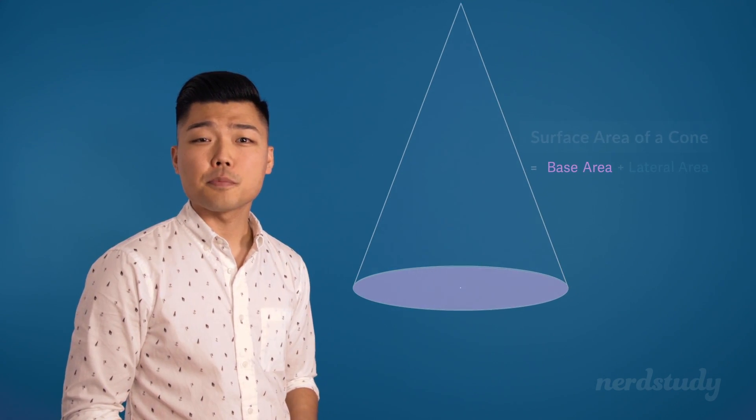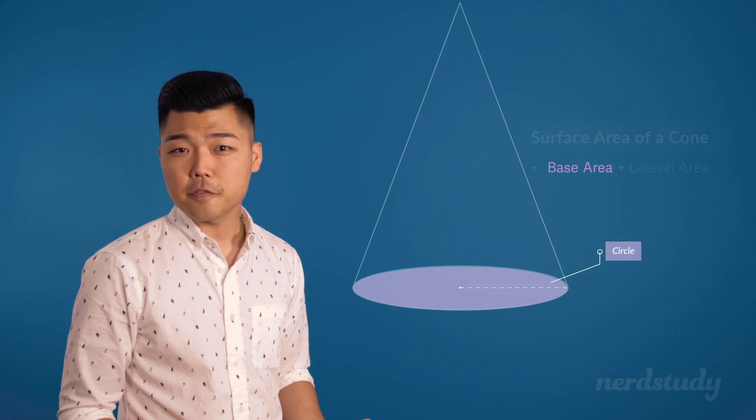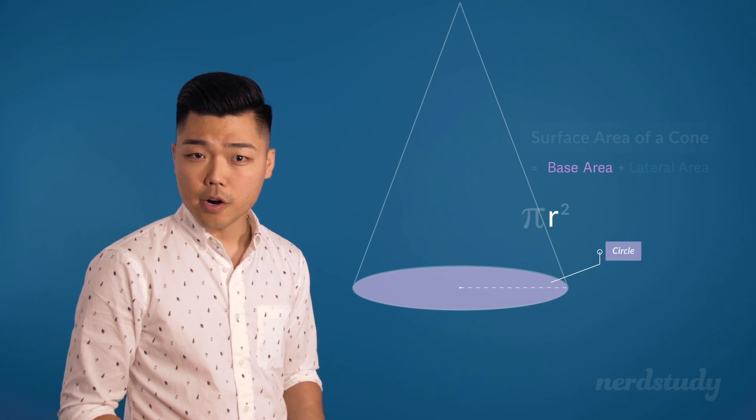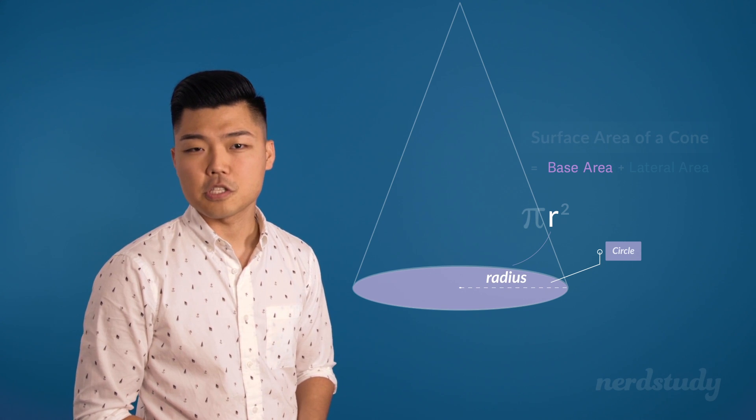The surface area of a cone is equal to base area of the cone plus lateral area of the cone. The base area of a cone is simply a circle. The area of a circle, as you might already know by now, is pi r squared, where r is the radius of the circle.